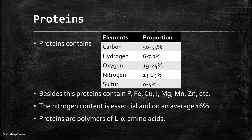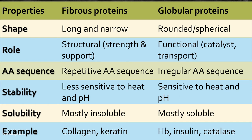Let's see the structure of proteins. From the functional classification — static and dynamic — we can categorize proteins into fibrous proteins and globular proteins. Fibrous proteins are long and narrow; globular proteins are rounded and spherical. Fibrous proteins give the structural component; globular proteins give a functional component. Amino acid sequence in fibrous proteins is repetitive, whereas it is irregular in globular proteins. Fibrous proteins are less sensitive to heat and pH, while globular proteins are sensitive to heat and pH and mostly soluble in water or organic solvents, whereas fibrous proteins are mostly insoluble. Collagen and keratin are examples of fibrous proteins, whereas hemoglobin, insulin, and catalase are examples of globular proteins.